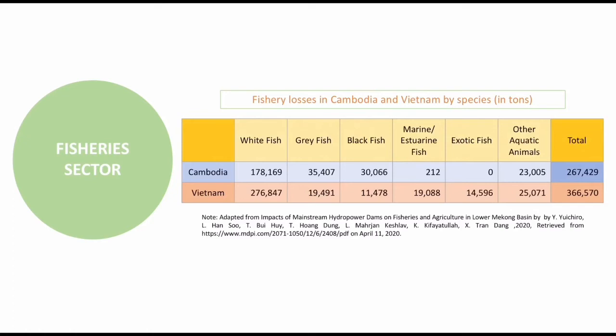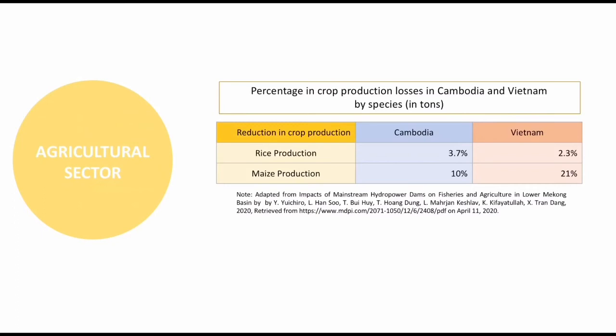Another sector being affected by these dams is the agricultural sector in Cambodia and Vietnam. The construction of these dams causes saltwater to intrude into the Mekong Delta, which results in a decrease in agricultural production. The reduction in sediment loading also greatly affects agricultural production. As shown in the table, the decrease in the percentage of rice and maize production in Cambodia and Vietnam reveals that maize production in the Lower Mekong Basin region received a greater impact than rice production, with a total of 31% decrease in both countries, while rice production reduction totals only 6%.